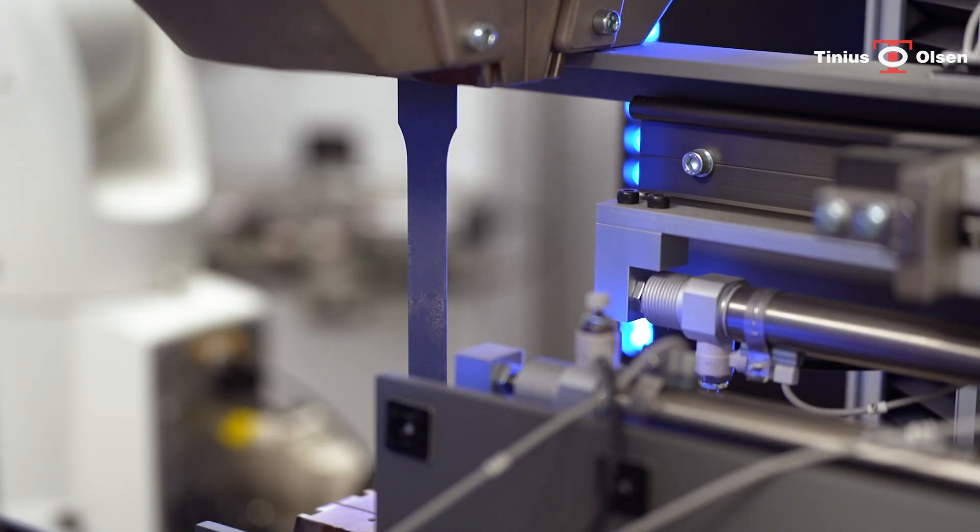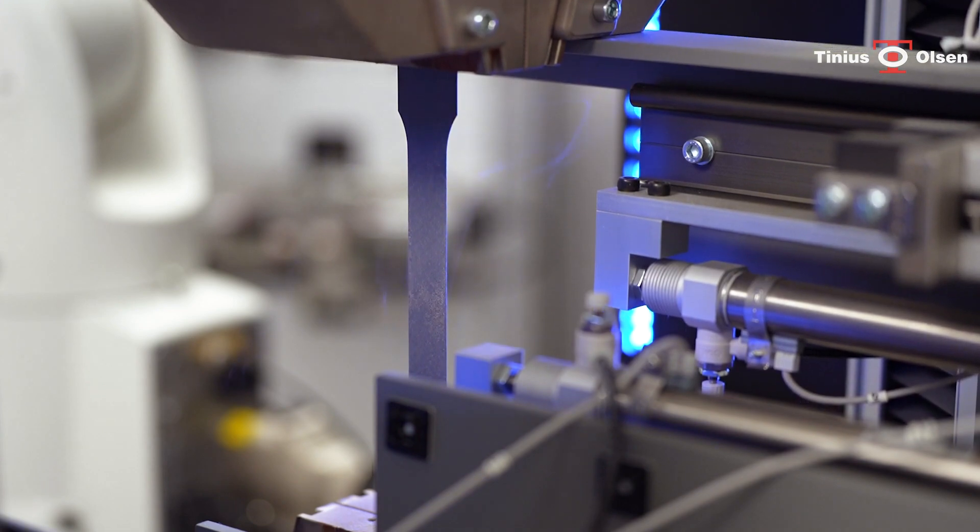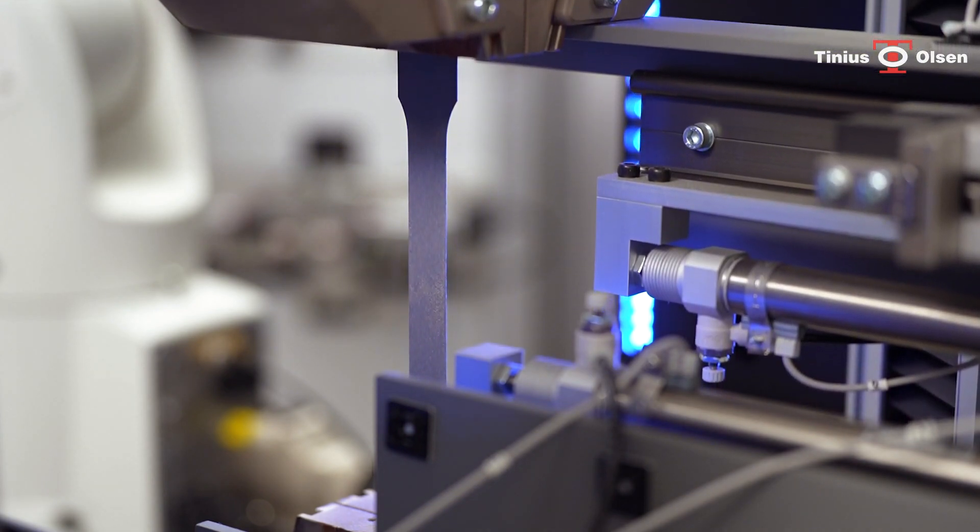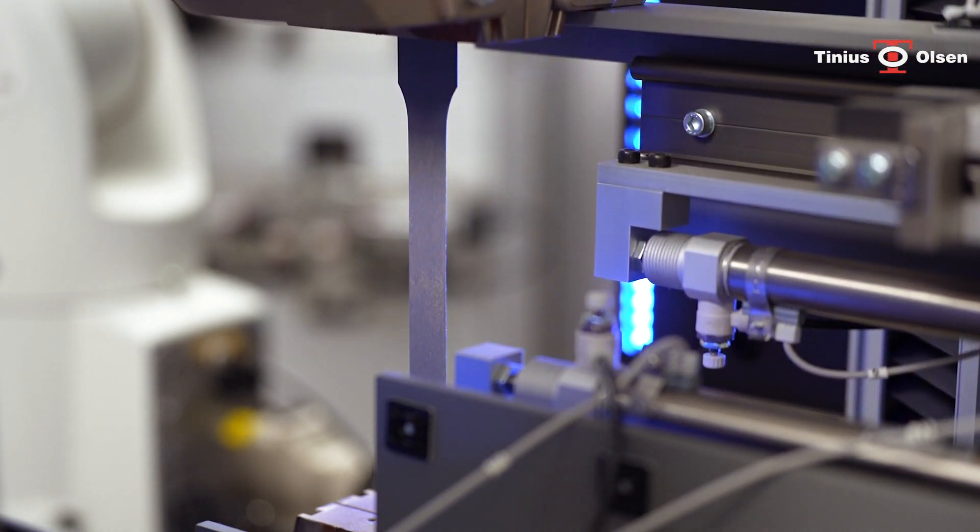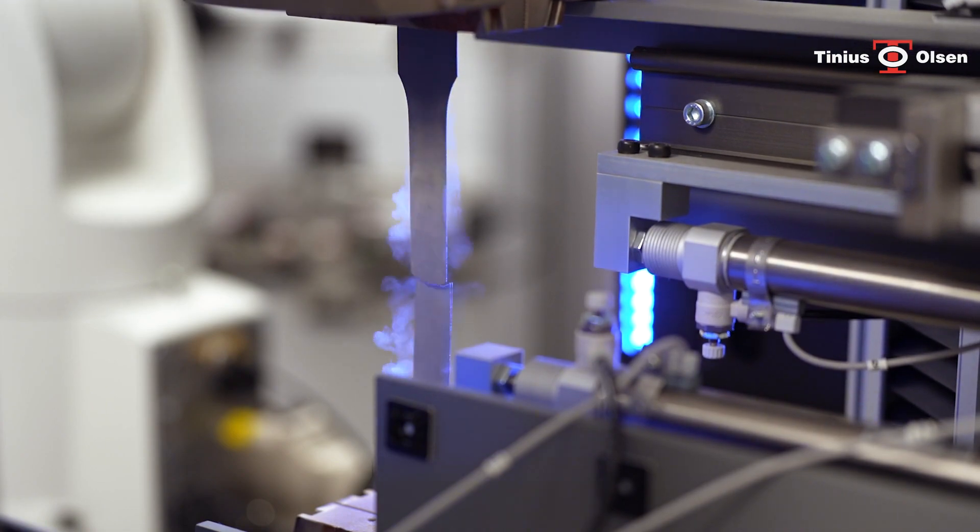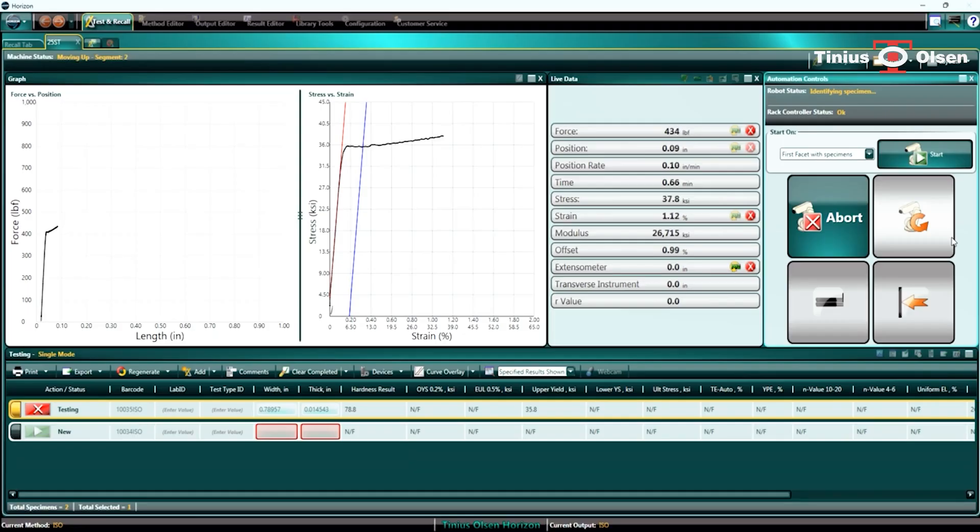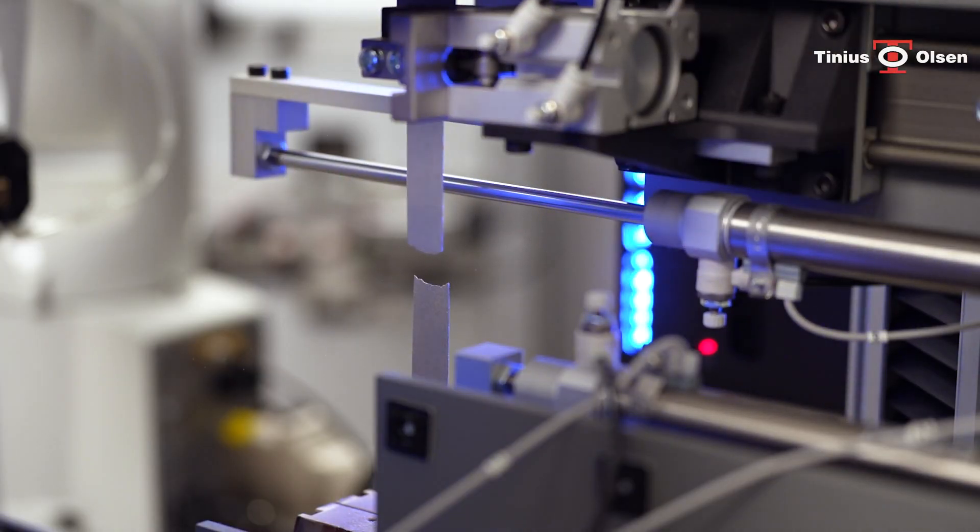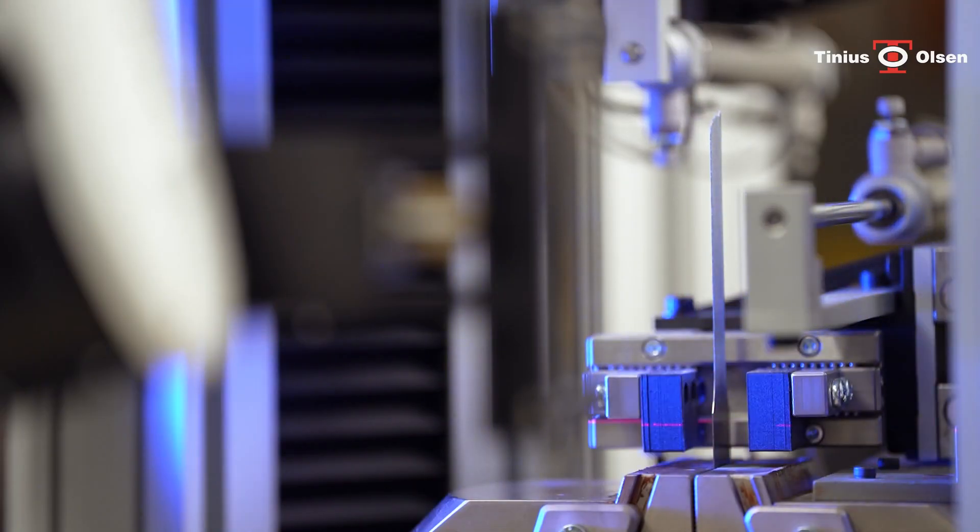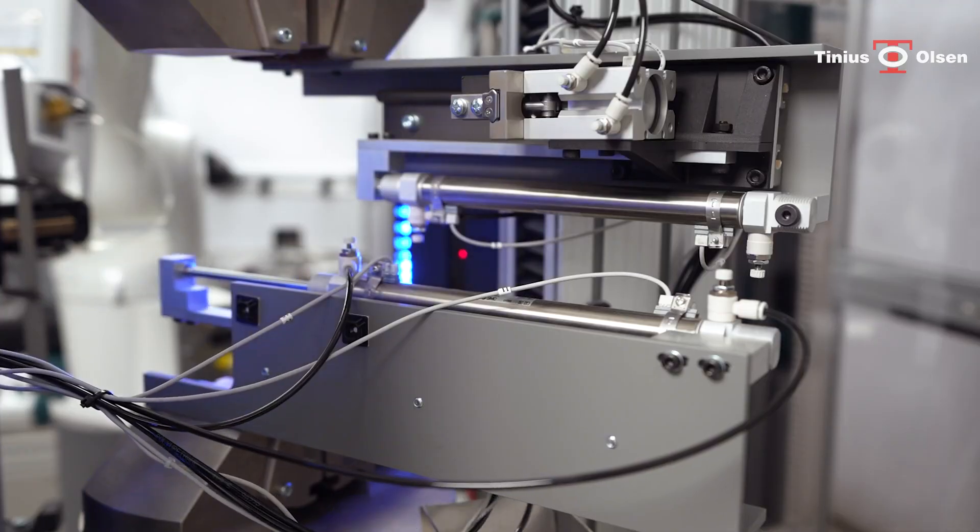The universal testing system will perform the test in strict accordance with ASTM or ISO standards. Once the specimen ruptures and the test concludes, the pneumatic specimen removal system on the 25 ST will automatically eject and discard the specimen into the designated bin behind the test frame.